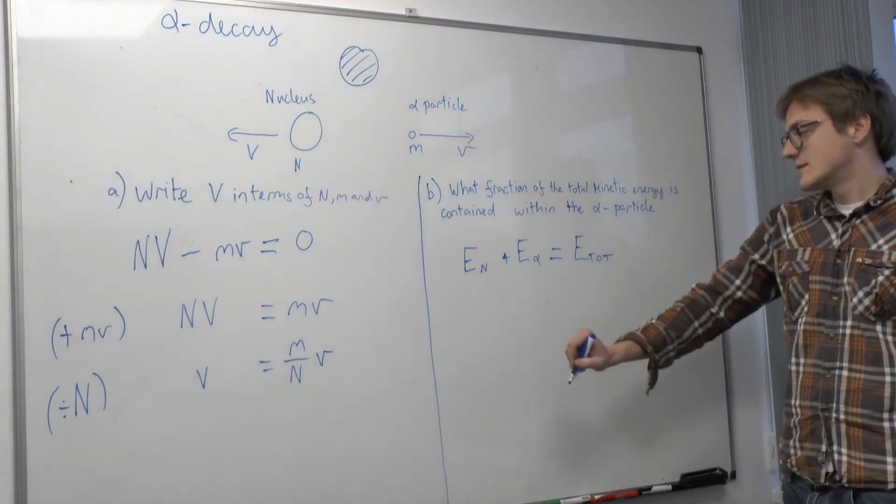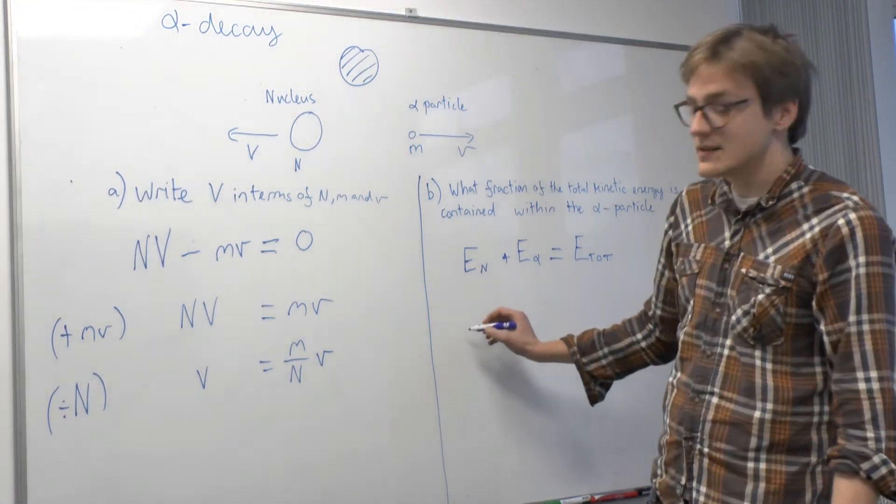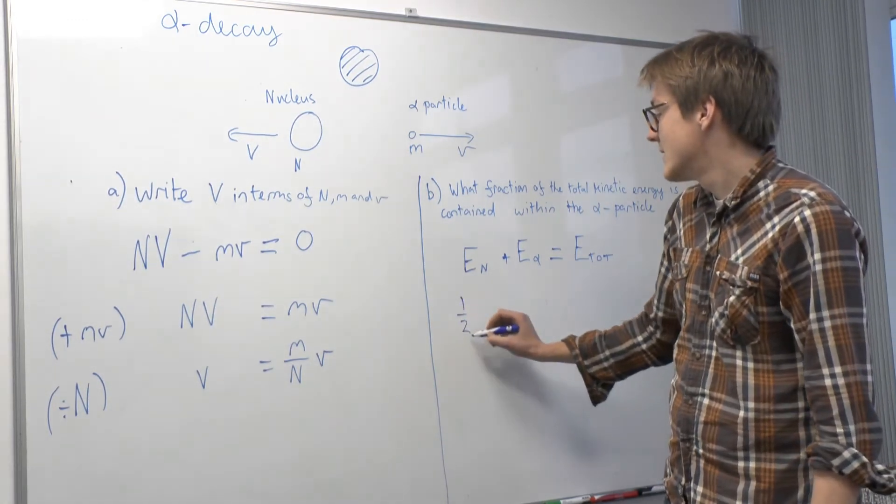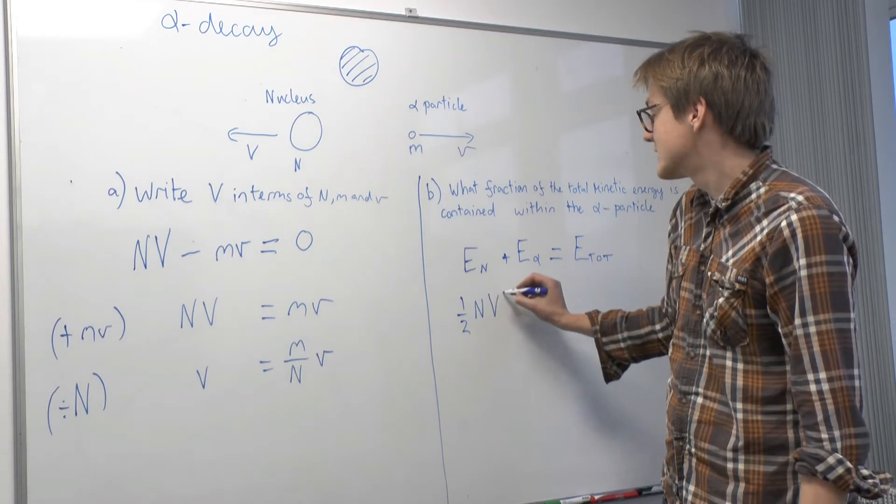Now, what is the expression for this? Well, we know the expression for kinetic energy. It's a half times mass times velocity squared.